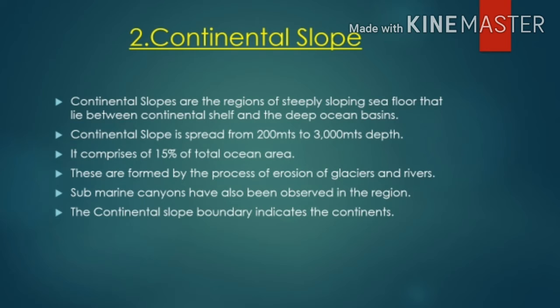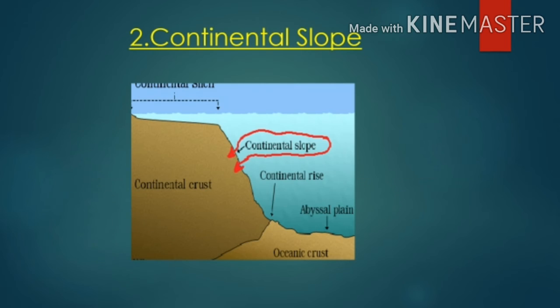The second part is the continental slope. Continental slopes are the regions of steeply sloping seafloor that lie between the continental shelf and the deep ocean basins. The continental slope extends from 200 meters to 3,000 meters depth and comprises 15 percent of the total ocean area. These slopes are formed by the erosion of glaciers and rivers, and submarine canyons have also been observed in this region.